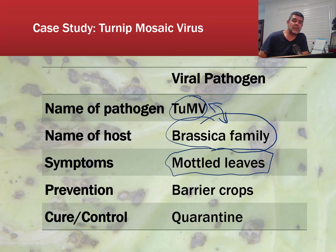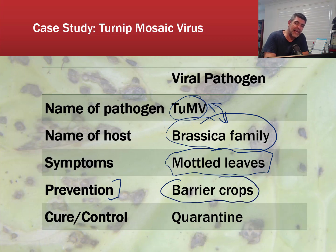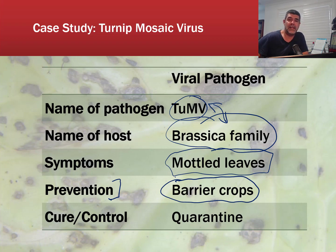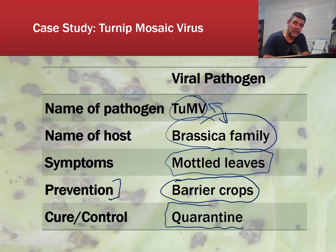What we want to do with our viral pathogen is look at preventions — the strategies that either the plant has itself, or that we as managers of the plant might use in order to prevent individual plants from being infected by this particular virus, and also what sort of control measures or cures we can look at.